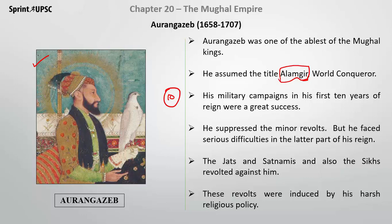But he faced serious difficulties in the later part of his reign. The Jats, Satnamis, and Sikhs revolted against him. The cause of their revolt was his harsh religious policies.